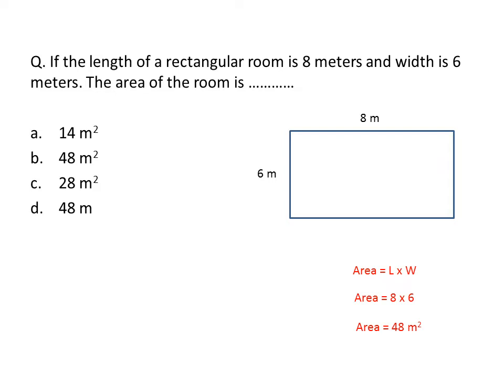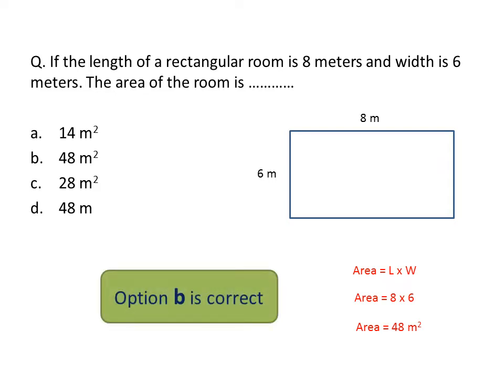Looking at the options, option B shows 48 meters — that is a distractor for confusion. Pay attention to the unit for area. When we calculate area, the unit should be square centimeter, square meter, or square kilometer — it must always be square something.